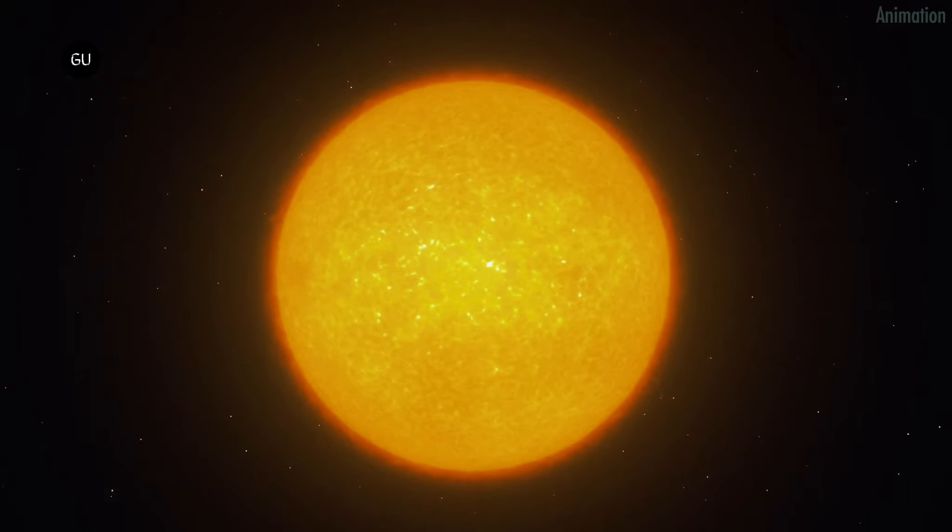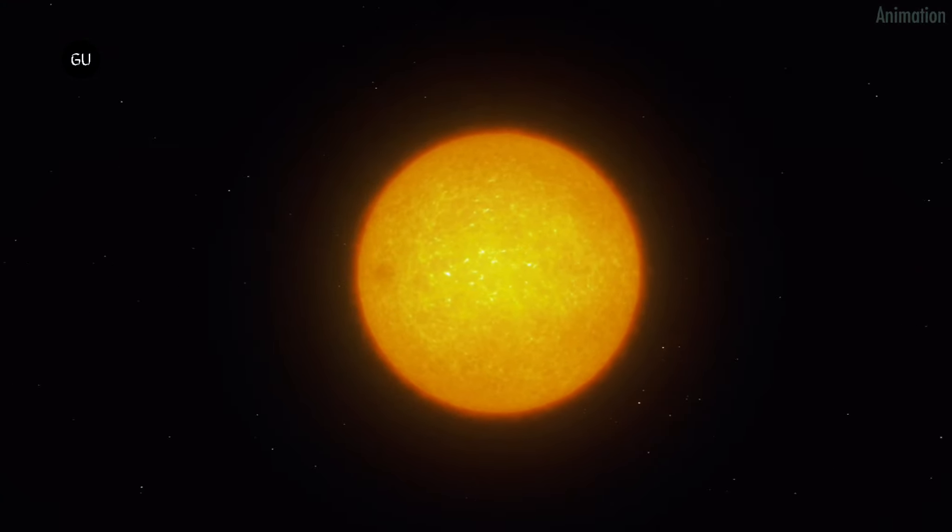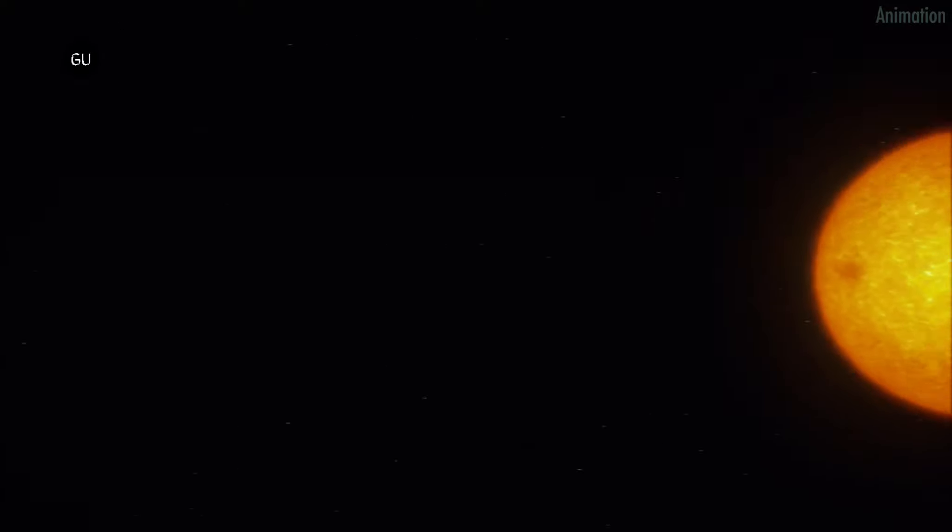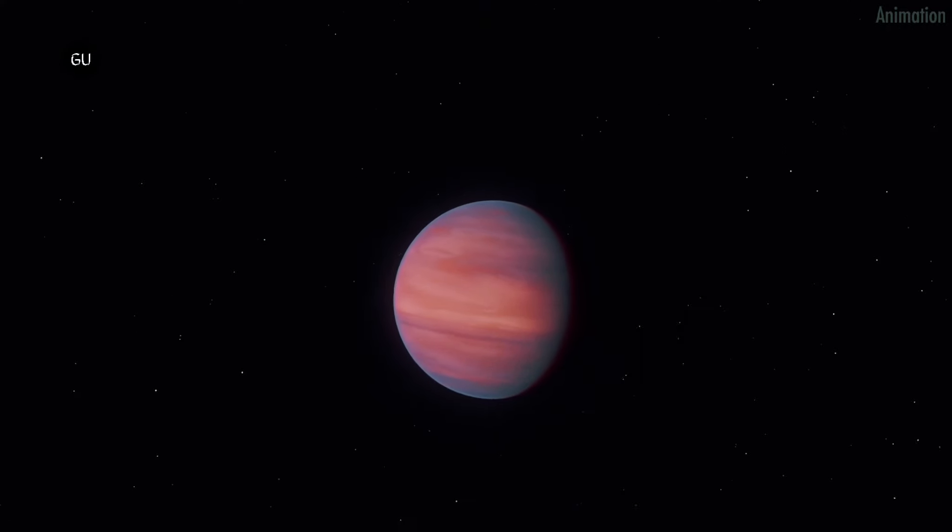AU Mike B, discovered in 2020 by NASA's Spitzer and TESS Space Telescopes, orbits its parent star every 8.46 days at a distance of just 6 million miles, roughly a tenth of the distance between Mercury and our Sun.